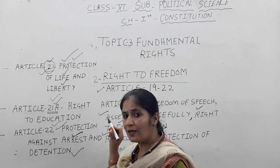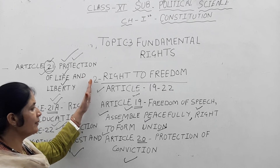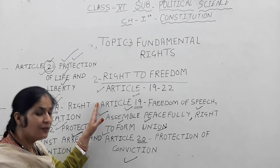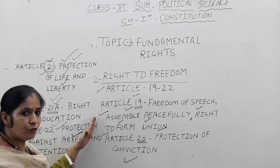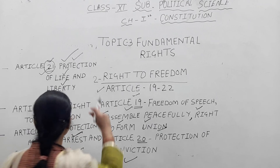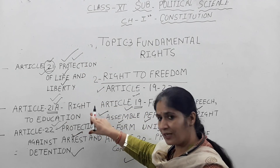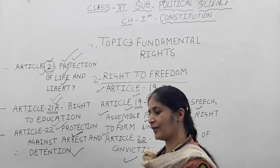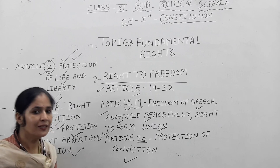Let's revise: right to freedom covers article number 19 to 22. Article 19 provides freedom of speech, the right to settle in any part of the country, the right to reside in any part of the country, the right to assemble peacefully, and the right to form any union. Article 20 provides protection of conviction. Article 21 provides protection of life and liberty. Article 21A provides right to education. Article 22 provides protection against arrest and detention. In the next topic, we will discuss the next fundamental right — right against exploitation. Thank you so much.